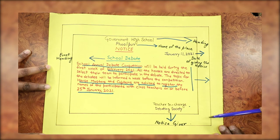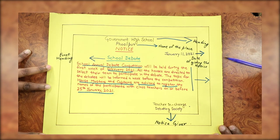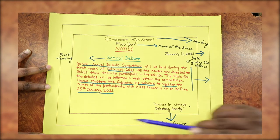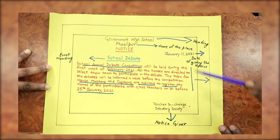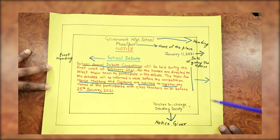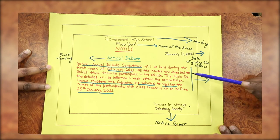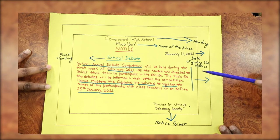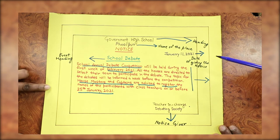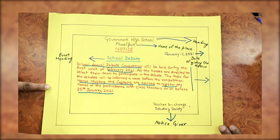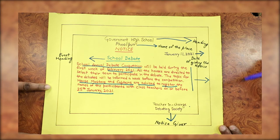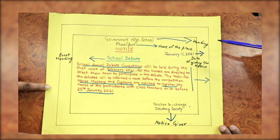Kriti and learners, if you follow this format — and any suitable format, there is no one particular format — if all the components are there, then you are getting 5 out of 5 in your board exam or any exam. This will also be helpful in your future life: when you become an officer or office person, you can easily draft your notice yourself.